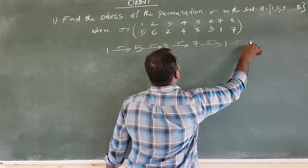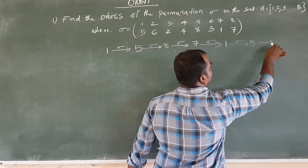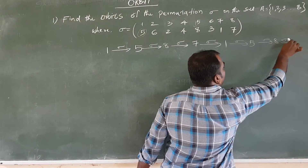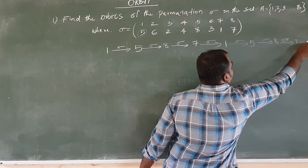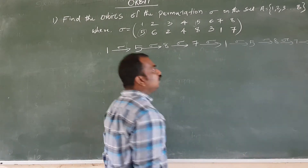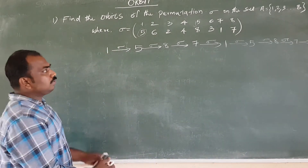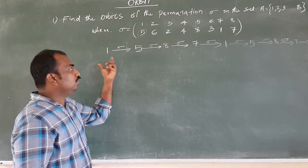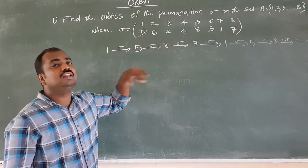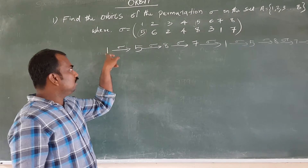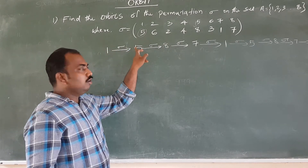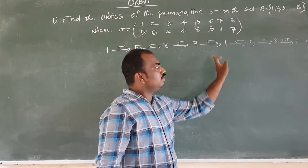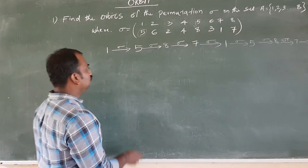1 in image 5, 5 in image 8, 8 in image 7, 7 in image 1, and then it repeats. So the orbit containing 1 is: 1, 5, 8, 7.